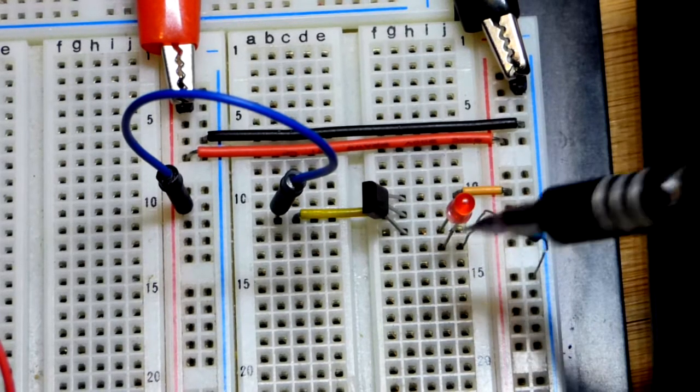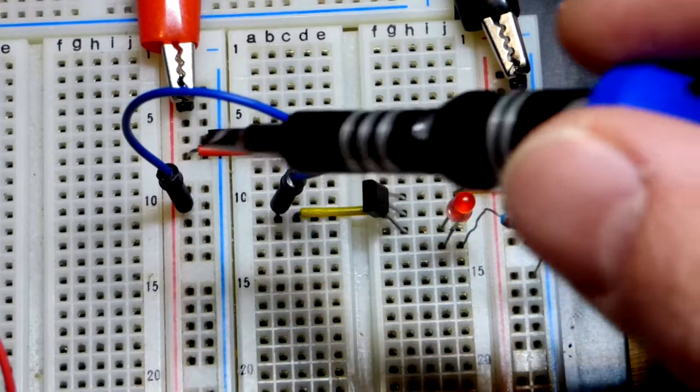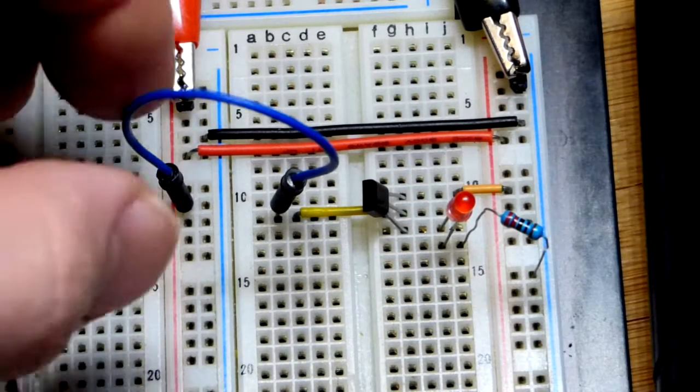The LED anode has to be more positive, cathode more negative. We have it to the positive supply right there. That is why it's off.